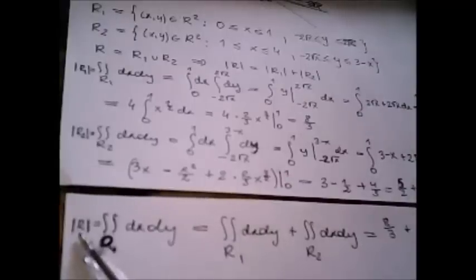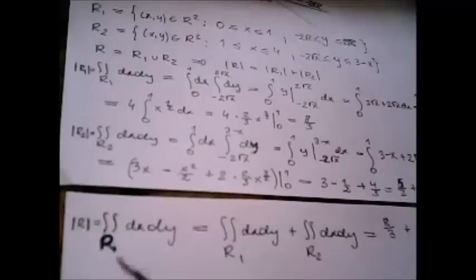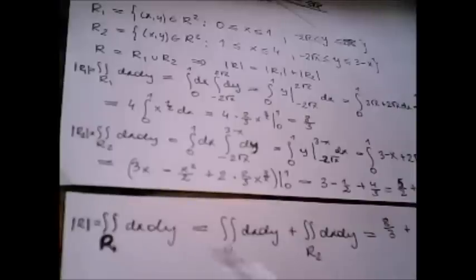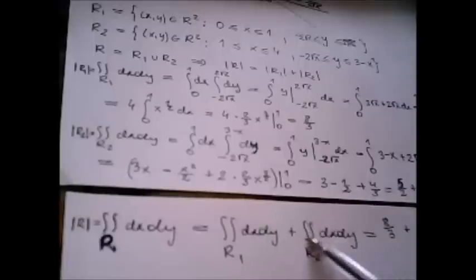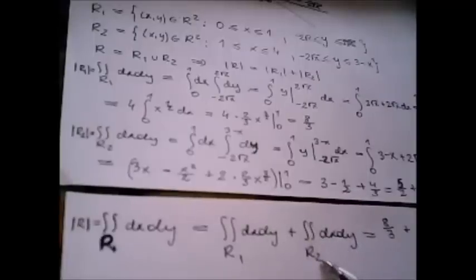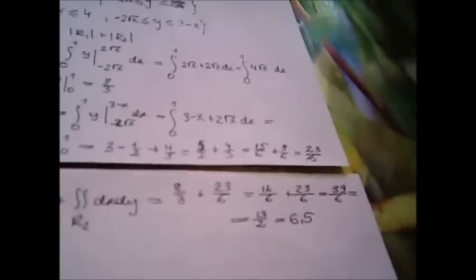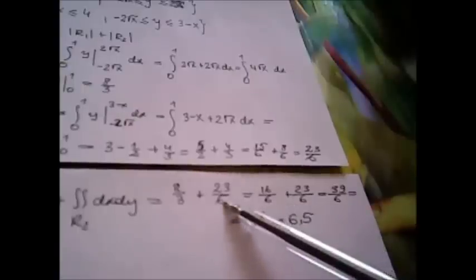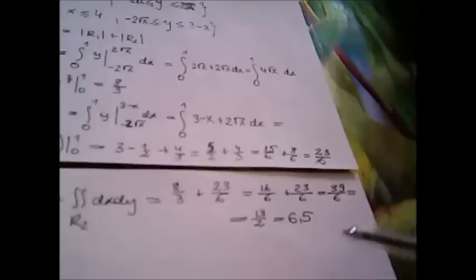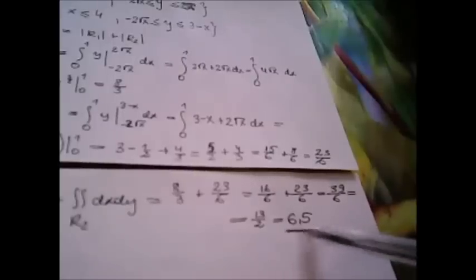The total area of R is the double integral over region R, which equals the sum of the double integral over R1 and the double integral over R2. This equals 8 over 3 plus 23 over 6, and finally we have six and a half.